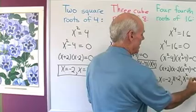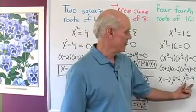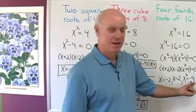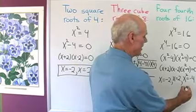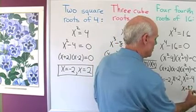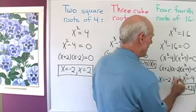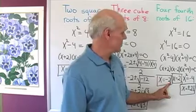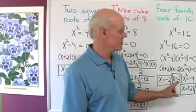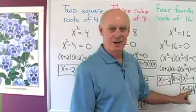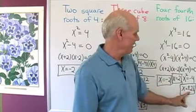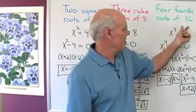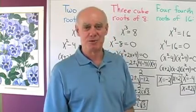Setting x squared equal to negative 4 and taking the positive and negative square root of both sides, the square root of negative 4 is 2i, so I get x equals plus or minus 2i. Here are my four fourth roots of 16: negative 2, 2, positive 2i, and negative 2i. Negative 2 to the fourth is 16, 2 to the fourth is 16, 2i raised to the fourth is 16, and negative 2i raised to the fourth is 16.